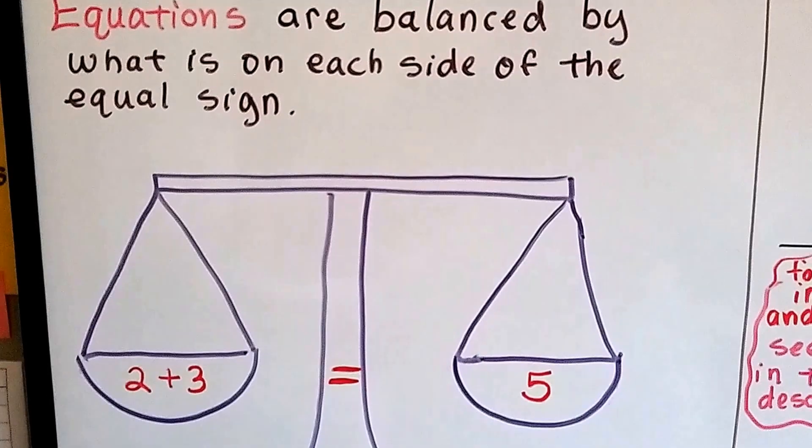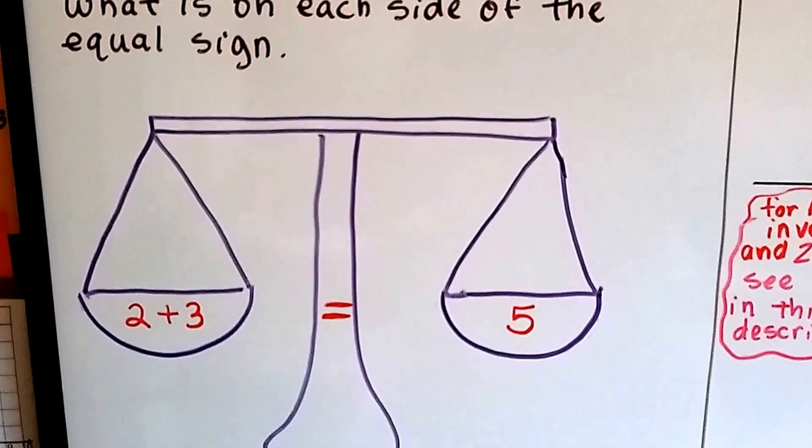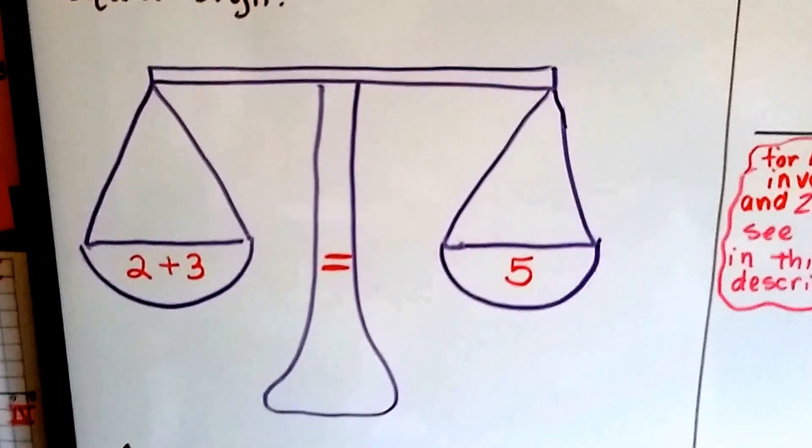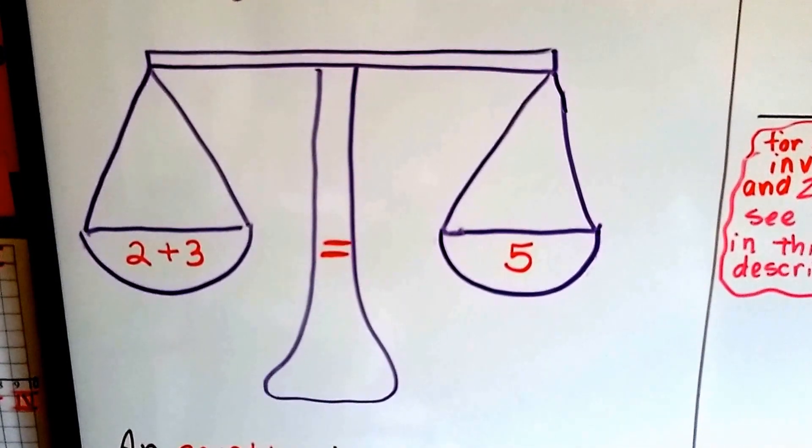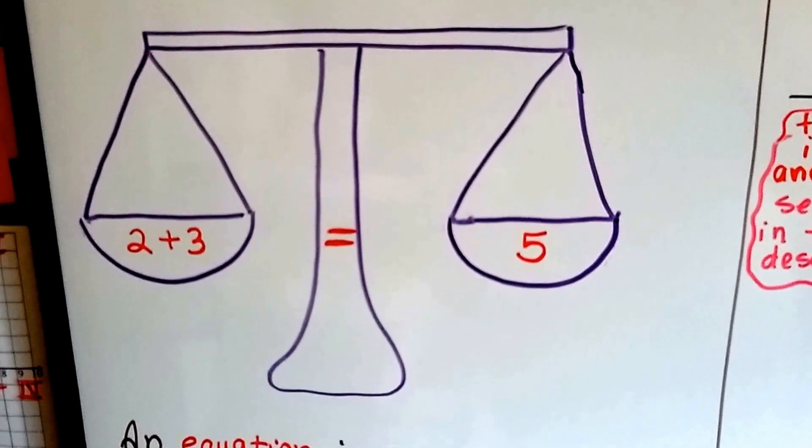Equations are balanced by what is on each side of the equal sign. See the scale? We have 2 plus 3 on one side with the equal sign in the middle and 5 on the other side, and it's balanced. They weigh the same.